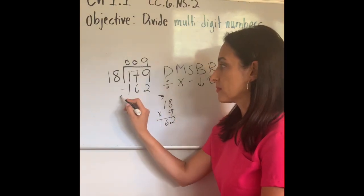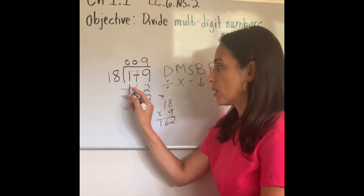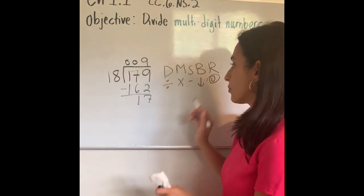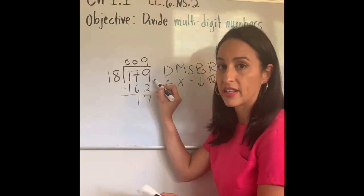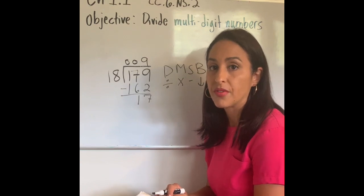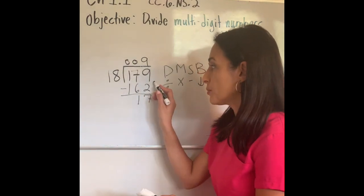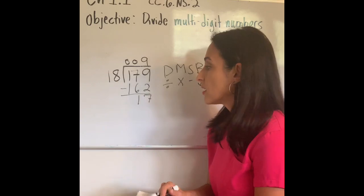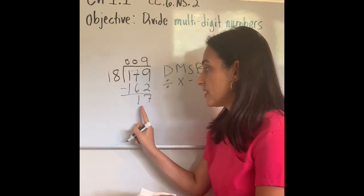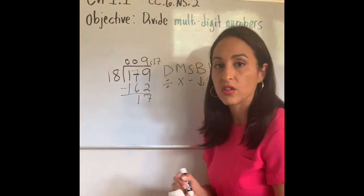9 minus 2 is 7. 7 minus 6 is 1, and 1 minus 1 is 0. So I have 17 here. Now I have to bring down—there is nothing to bring down here. Today we are going to be allowed to divide with a remainder, so there is nothing to bring down. I'm not going to do decimals. I have a remainder of 17. I'm going to make sure that this remainder is less than my divisor, and yes it is. So I can write that the answer is 9 remainder 17, and I'm all done.